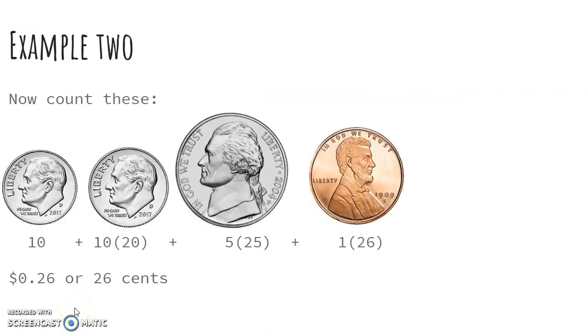Now example two, I have four coins to count. I have two dimes, a nickel, and a penny. So the first thing I'm going to do is count my dimes because I know they're worth the same. So I have 10, 20. So I have 20 cents in dimes.